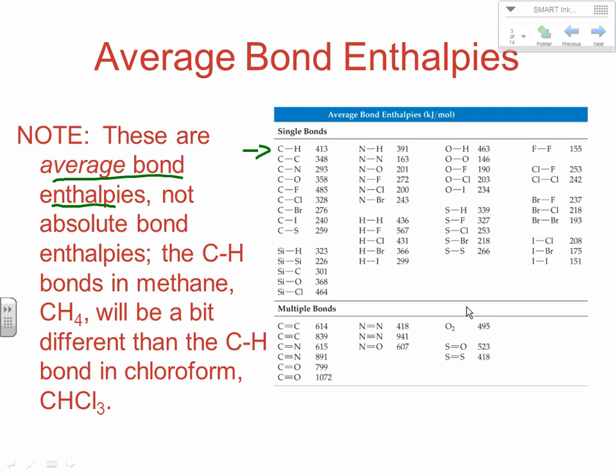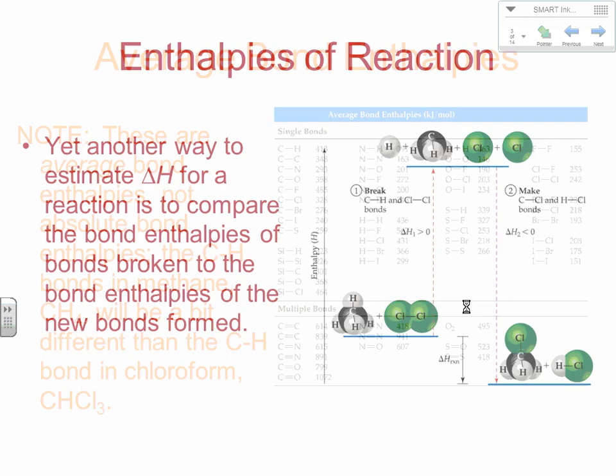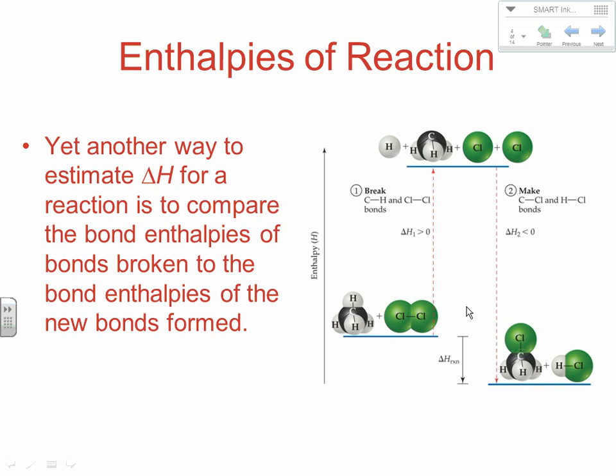What we're really doing here is estimating enthalpies. The accuracy is fairly close — these numbers go to one decimal place — but there are some uncertainties that are a little larger than our formation enthalpies. So we often refer to this as estimating delta H for a reaction. But it is a quick, easy way with a very short table to get numbers very similar to what we did back in Chapter 5.